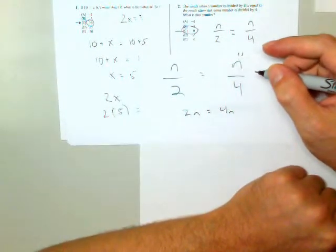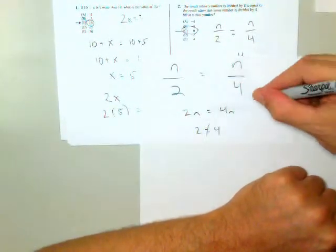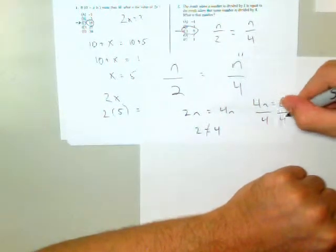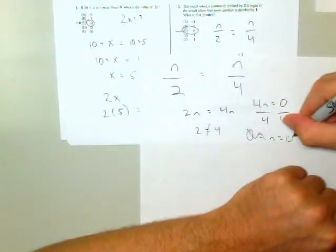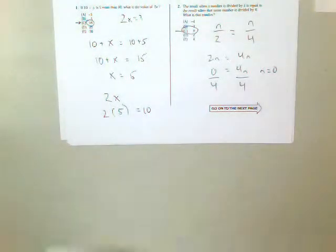And then if I divide by n, I'll get 2 equals 4, and it doesn't help me. If I subtract 2n, I'll get 2n equals 0. Now I'll divide by 2, and I'll get n equals 0, which is what I want. But 0 is the only number that has that property.